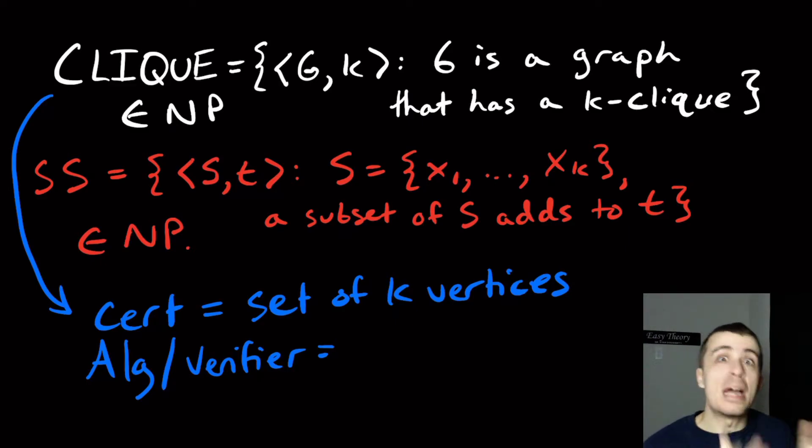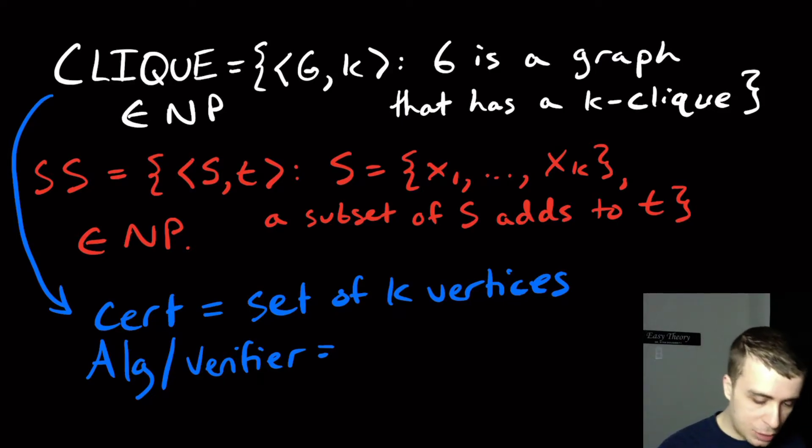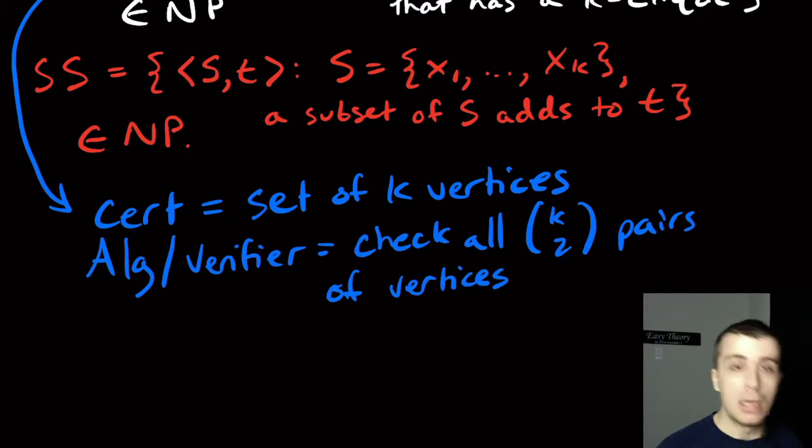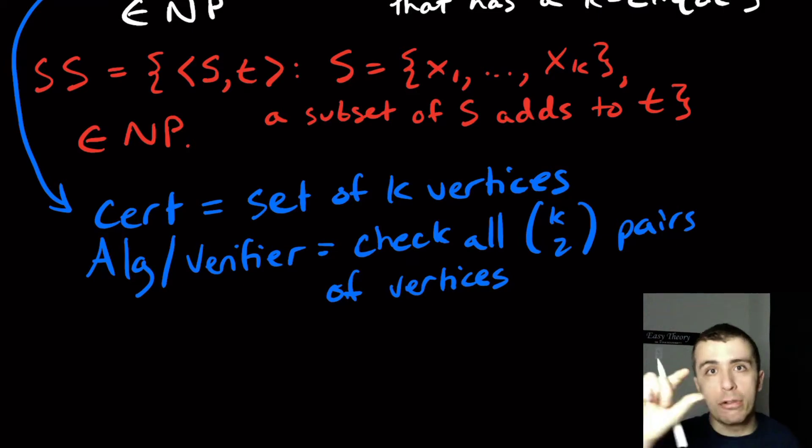And what you have to do is check all k choose 2 pairs of vertices to see if there's an edge there. So if there is no edge for a particular pair, then we reject immediately.